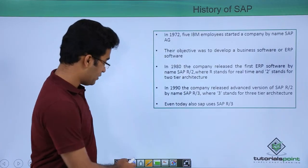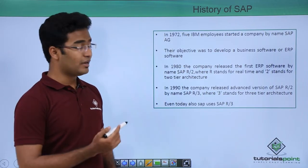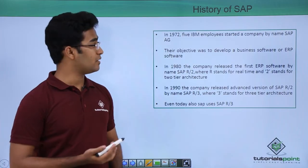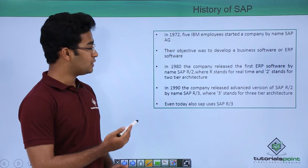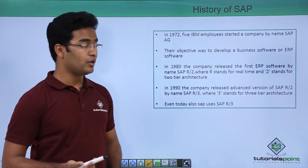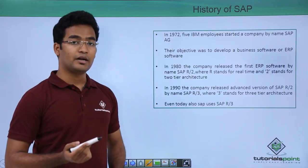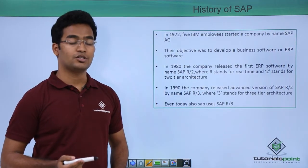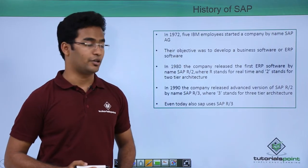Now let us see the history of SAP. Five IBM employees started SAP software with the name SAP AG in 1972. Their objective was to develop business software or ERP software. In 1980 they released the R2 system, that is R2 architecture of SAP, where R stands for real time and 2 stands for two-tier architecture.